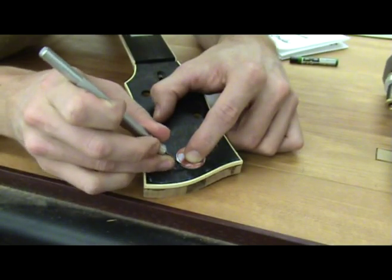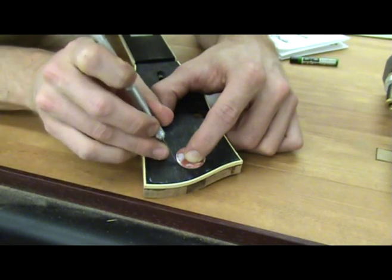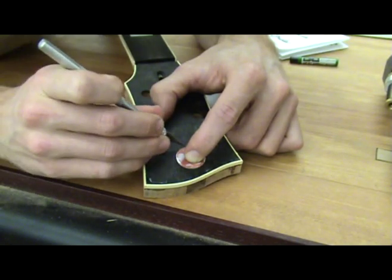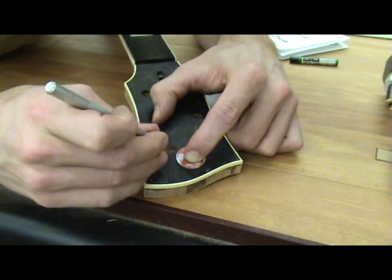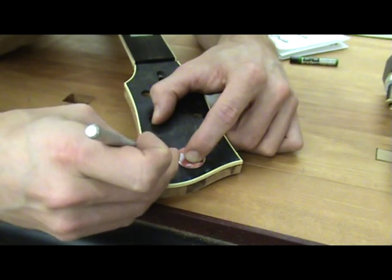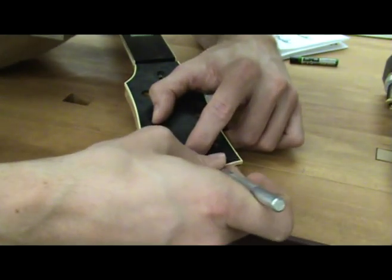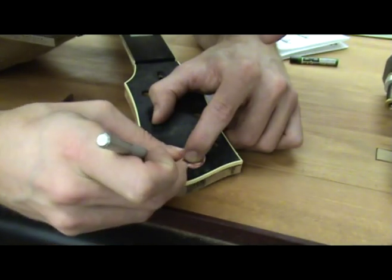Now we are ready to inlay this baby into the wood. Start by placing it where it is going to live and hold it down while you scribe around it with an exacto knife. If you prefer, you can temporarily glue it down with a tiny bit of CA glue while you scribe the outline and then remove it by sliding a razor blade underneath.